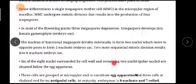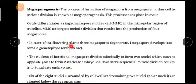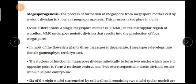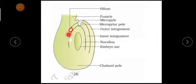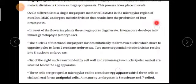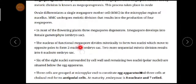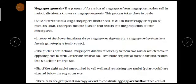One megaspore develops into the female gametophyte, which is called the embryo sac; the others will degenerate. Only one will be left and it will develop into the embryo sac. This embryo sac is being developed from the leftover megaspore. The nucleus of the functional megaspore divides mitotically to form two nuclei, which move to opposite poles to form a two-nucleate embryo sac.